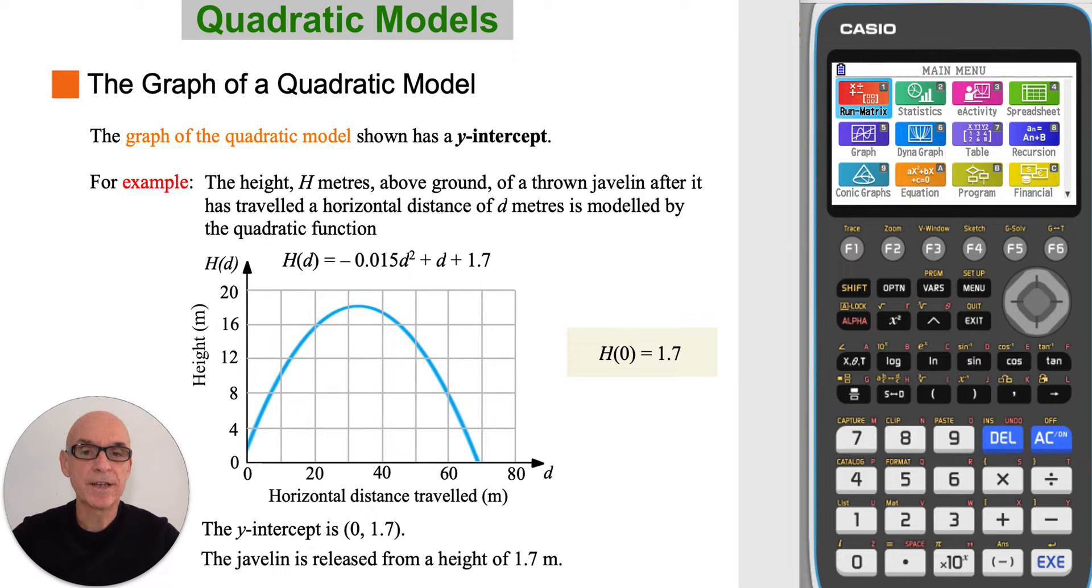The model has a y-intercept. The y-intercept is the point 0, 1.7. This is interpreted in the context of the model by stating that the javelin is released from a height of 1.7 meters.